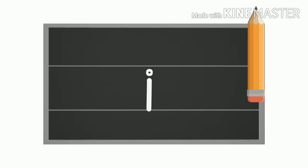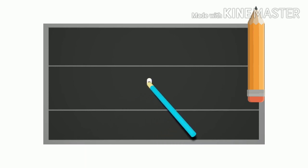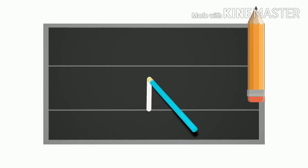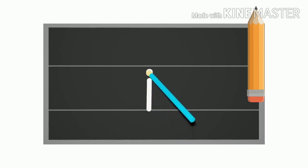Small i: start from the middle to make a standing line and add a small dot above the line. This is your small i.